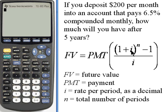So i is the rate per period as a decimal. We want to take the rate per year, it was 6.5%, we'll enter that as a decimal, 0.065, and we have to divide that by the number of periods per year. It was compounded monthly, so we're dividing that by 12.